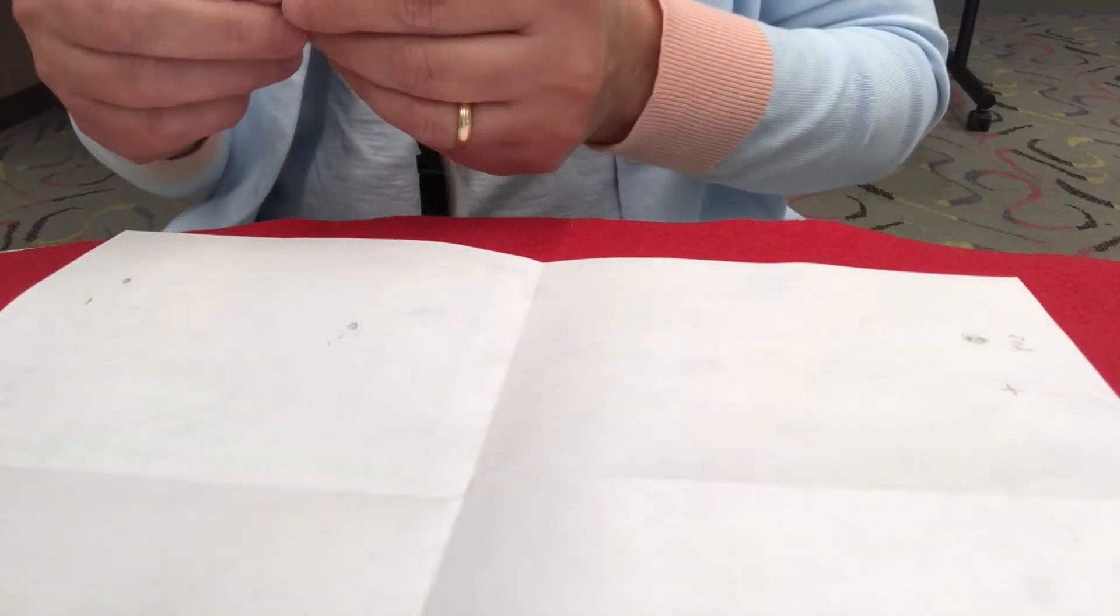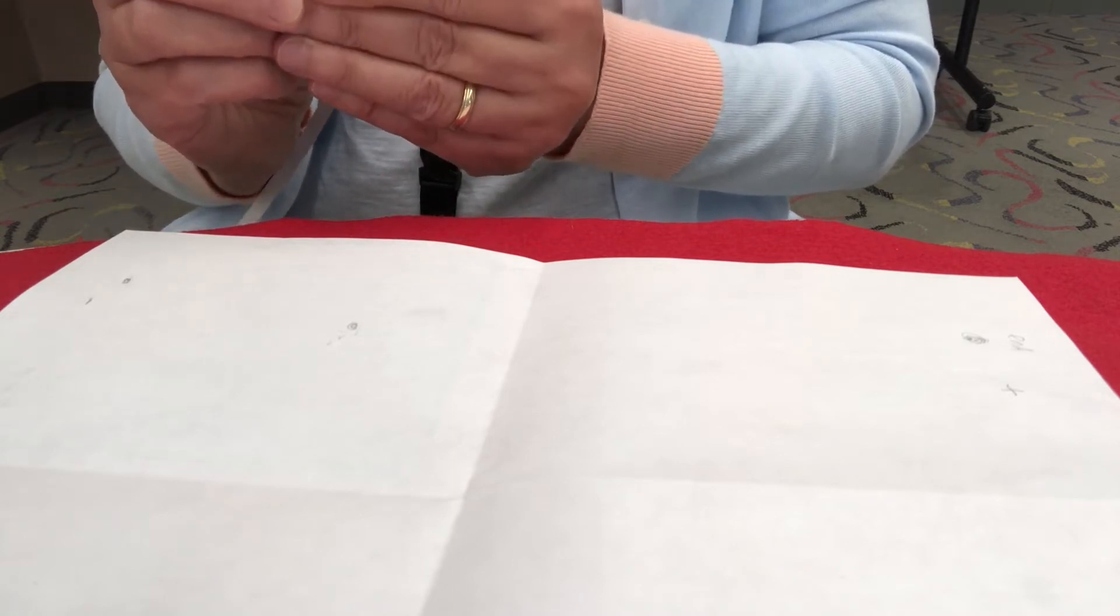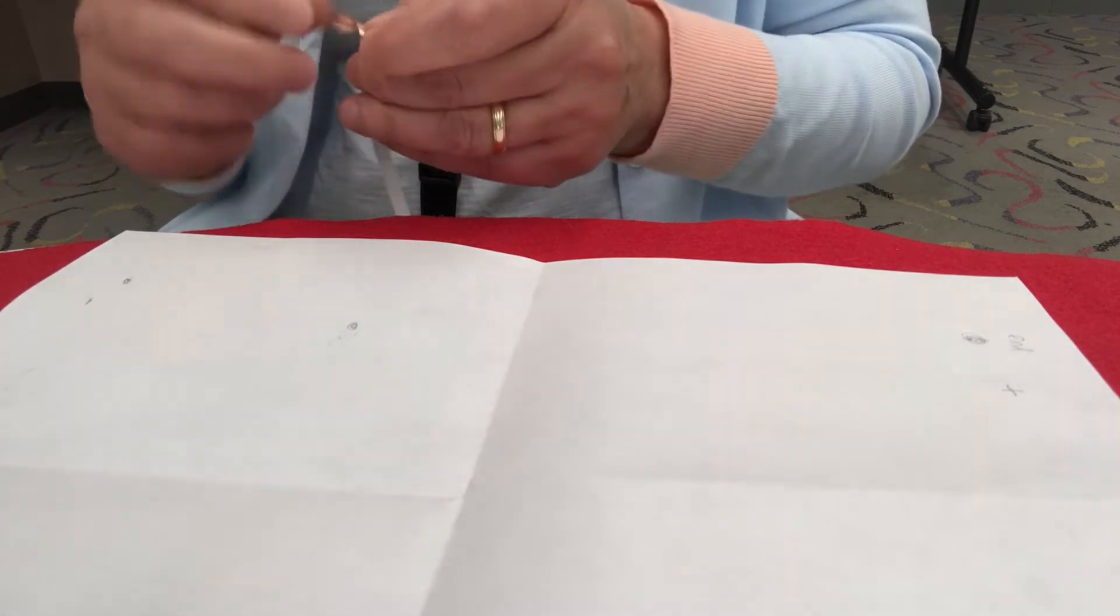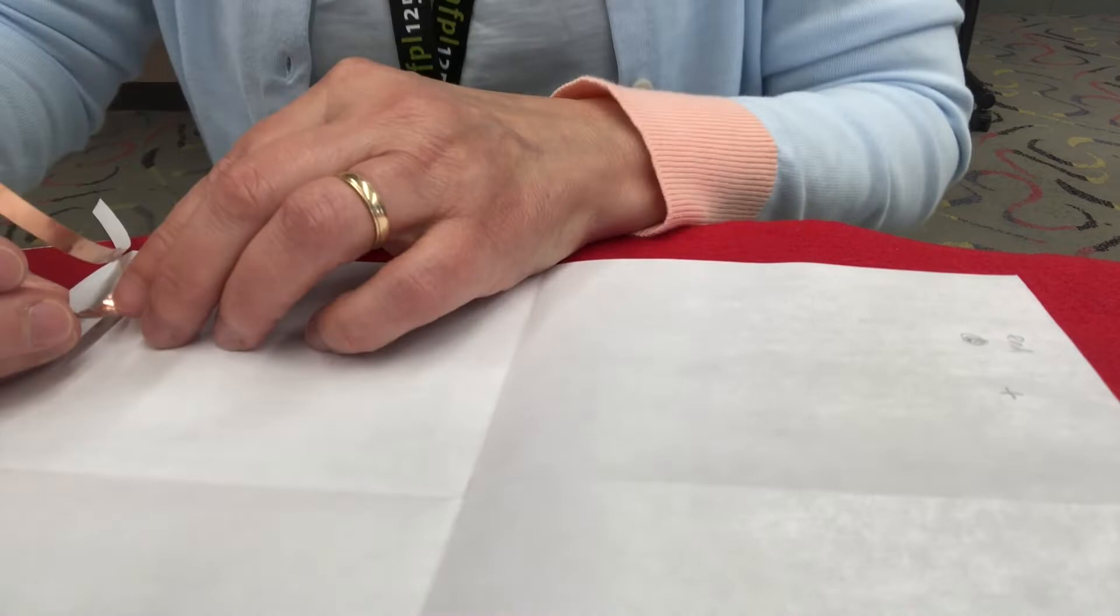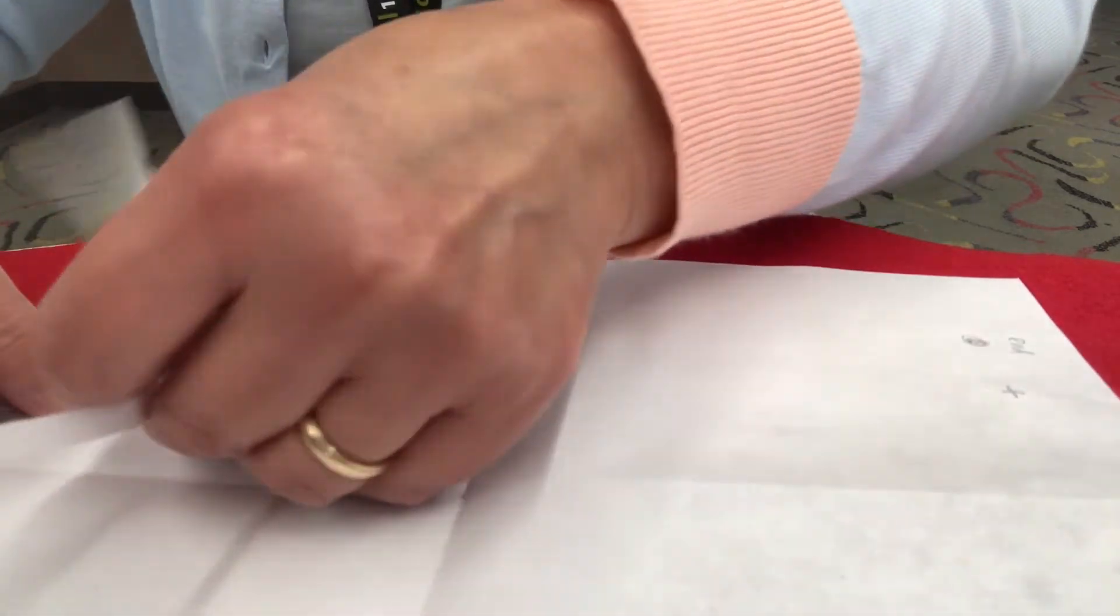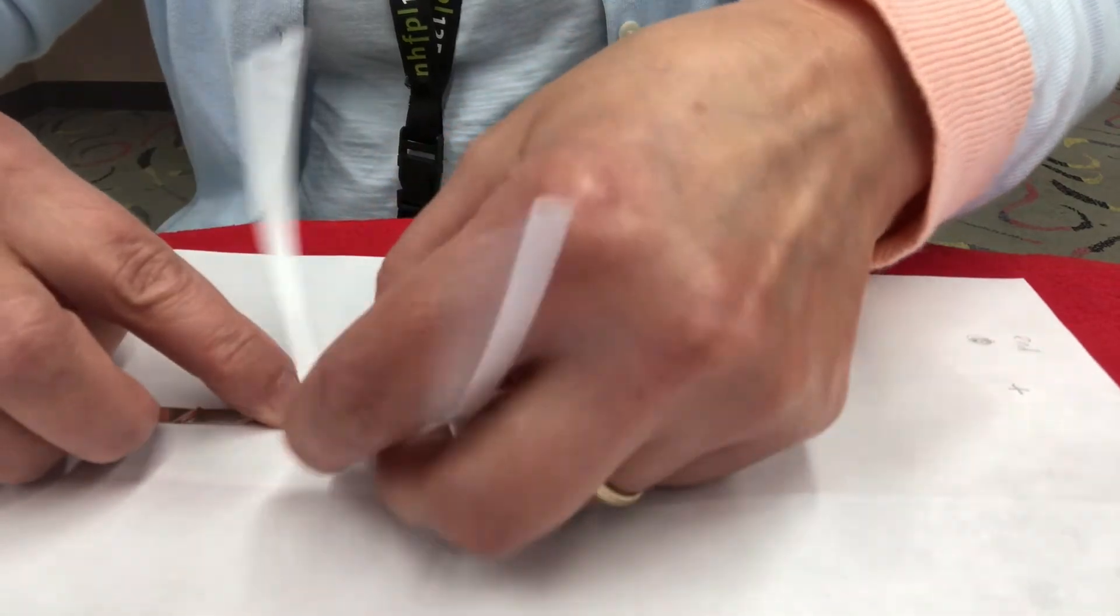Now you're going to start putting down your copper tape. Unpeel just a little bit at a time, because it will get all tangled up and stuck to itself if you peel too much. Pressing the copper tape into place. It's sticky on the bottom.